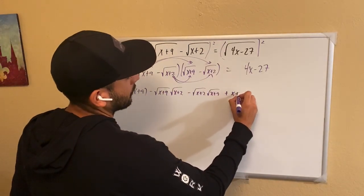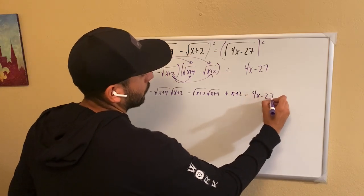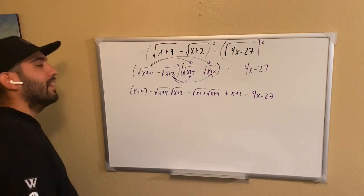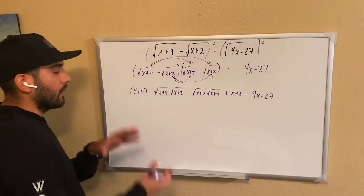Then we have the last. That's going to become positive x plus 2, and that's equal to the right side. Okay, looks messy, but trust me, it's going to work out just fine.